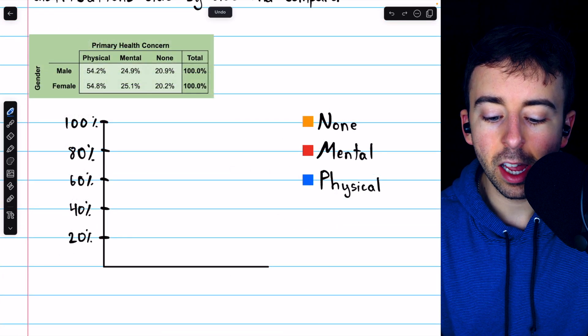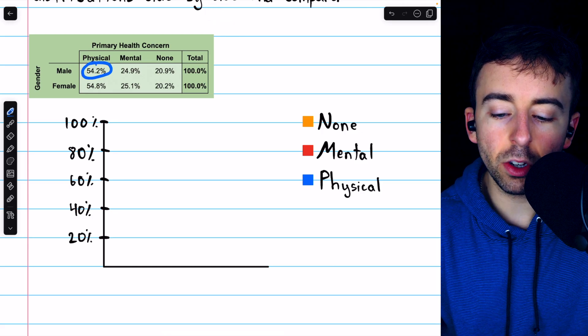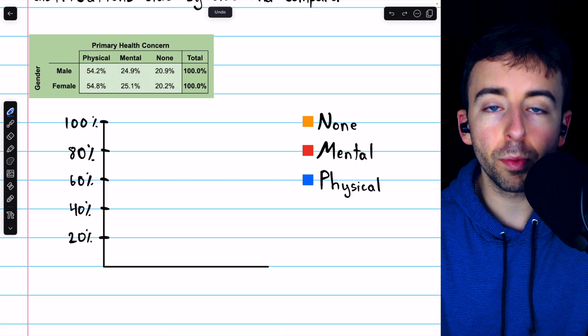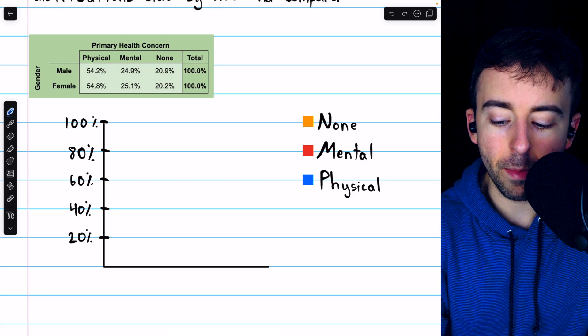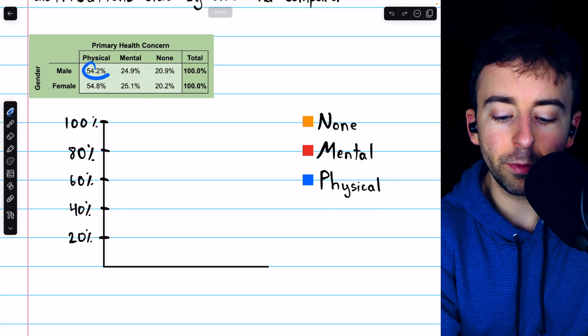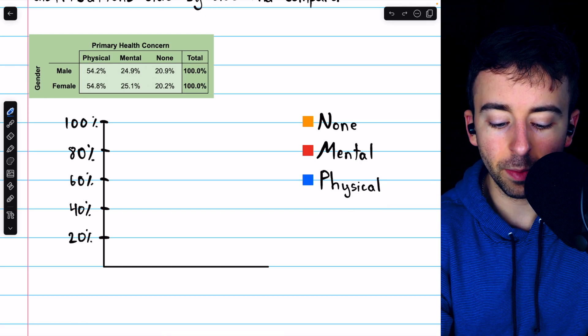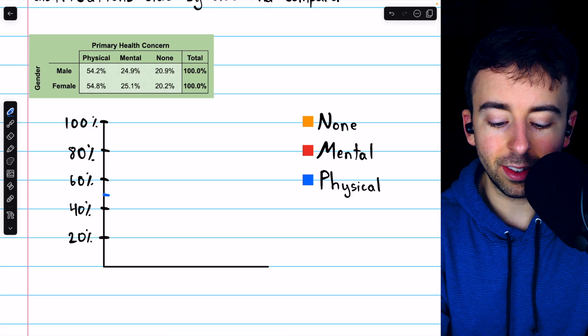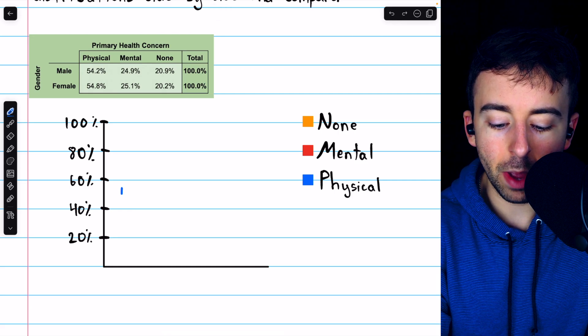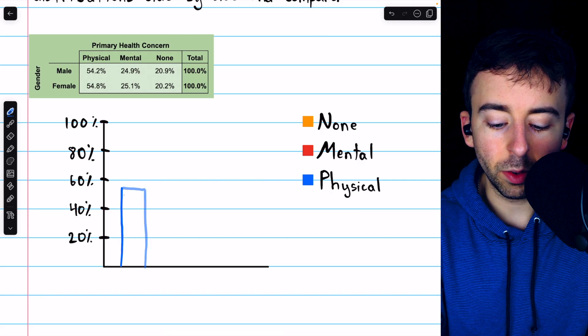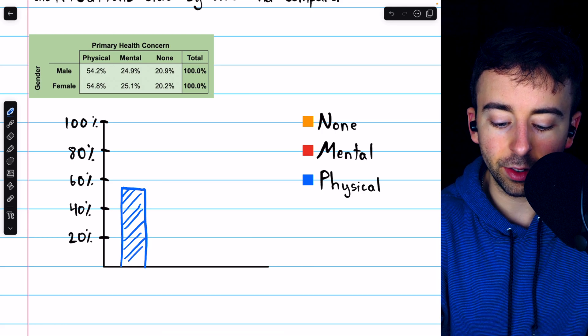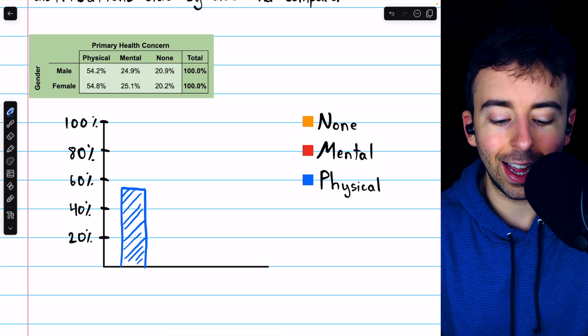But let's begin making these bars. We'll start with the bar for males. Males had 54.2% of their group saying that physical health concerns were their primary concern. So the first part of the male bar should be a blue segment, which goes up 54.2%. 50% is right in between 40 and 60, so 54 would just be a little bit bigger than that. So maybe right up to there. So this is representing the portion of men who said they had primarily physical health concerns. And I'm just shading that blue.